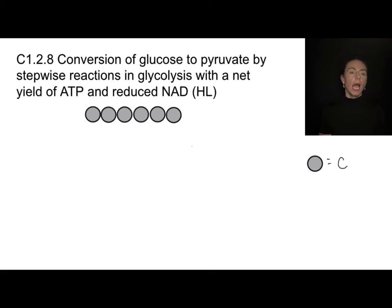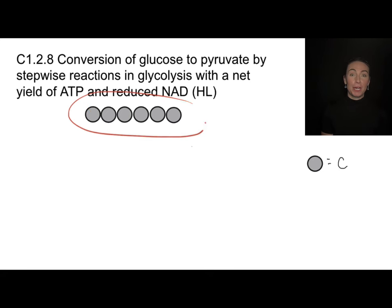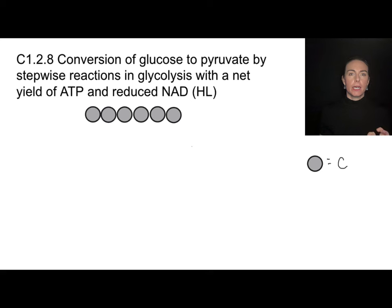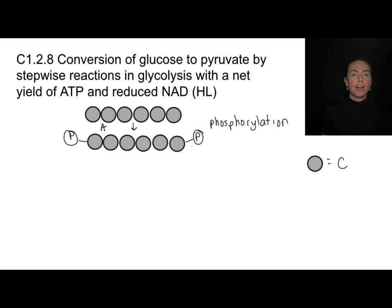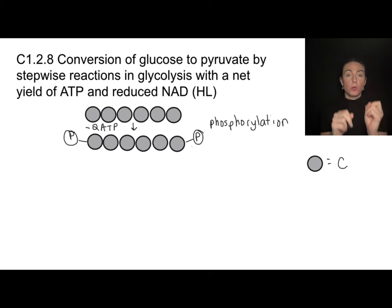Let's diagram this out using gray circles, each representing a carbon. We start with a six-carbon compound — glucose. Before we can break it in half, glucose is very stable, so we need to destabilize it by adding a phosphate group to both ends. This step is called phosphorylation. ATP donates a phosphate group and becomes ADP. We need two phosphate groups, which means we need two ATPs — so we spend two ATPs just to get this process started. Once done, the molecule is unstable enough to break in half, a process called lysis.